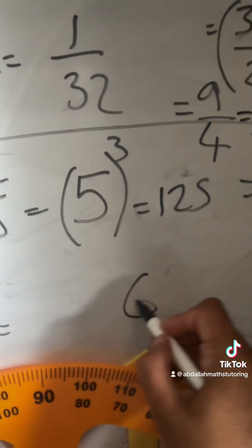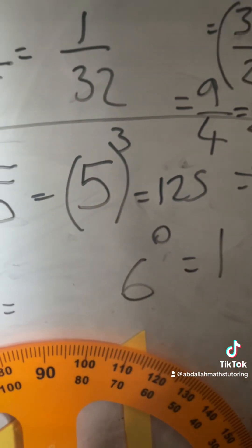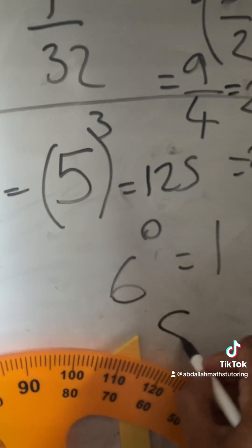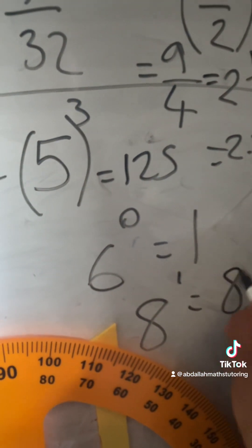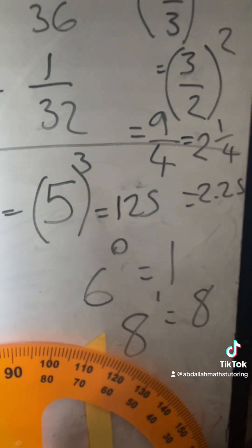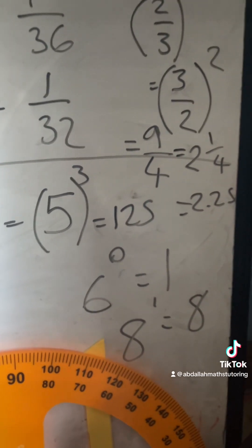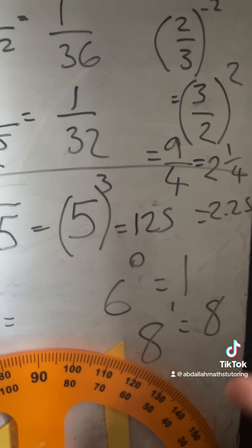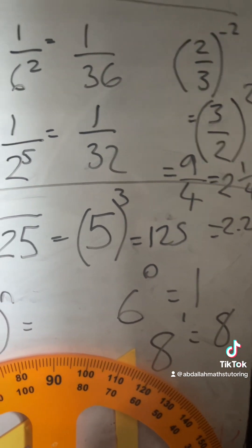Any number to the power of 0 in maths is equal to 1, and any number to the power of 1 is just itself. So make sure you're also happy with the laws of indices: if you multiply with the same base, you add the powers; if you divide with the same base, you subtract the powers.